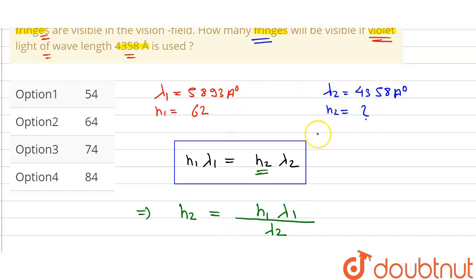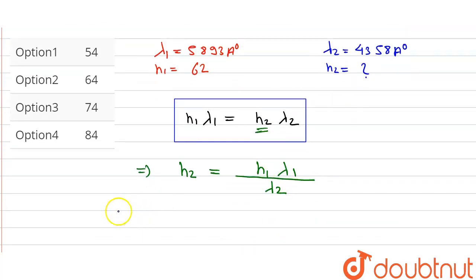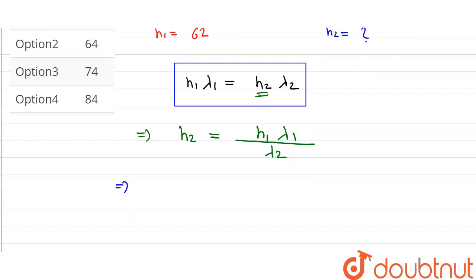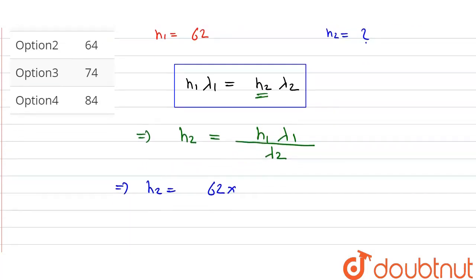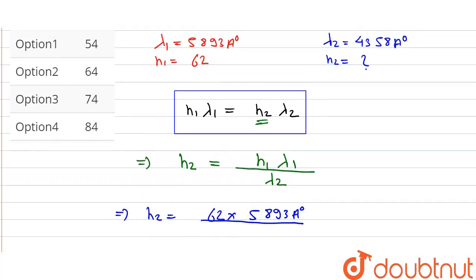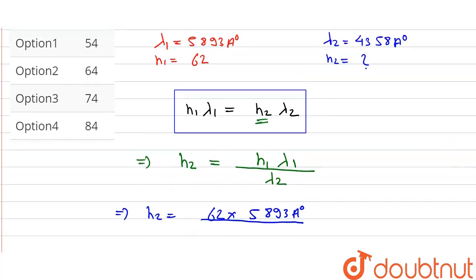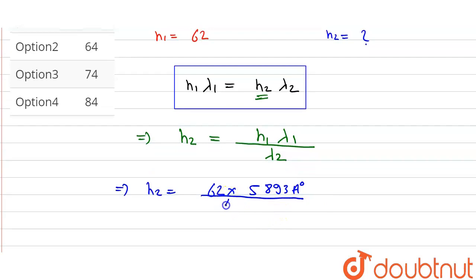Now we will put all the values in our given equation to find the N2 number of fringes. We will get N2 equals the value of N1 is 62 times the value of lambda 1 is 5893, divided by the value of lambda 2 is 4358.